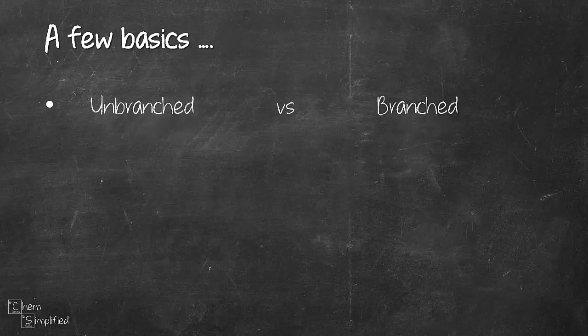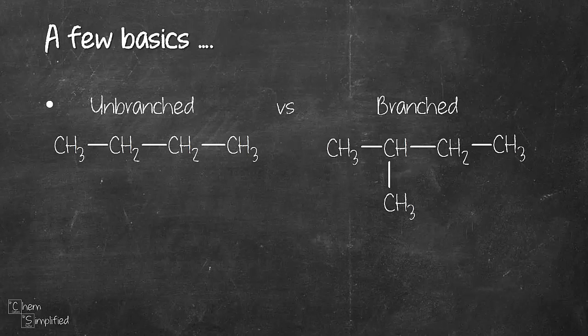Before we get started, let's go through a few terms you may encounter in this video. First being unbranched versus branched. Unbranched compound is shown on the left-hand side where you have, in this example, four carbons connected straight in a row, whereas branched is the one that is shown on the right-hand side.